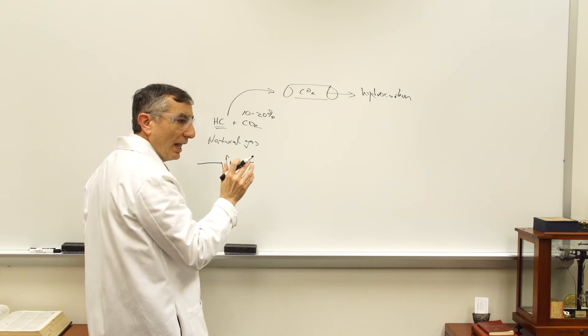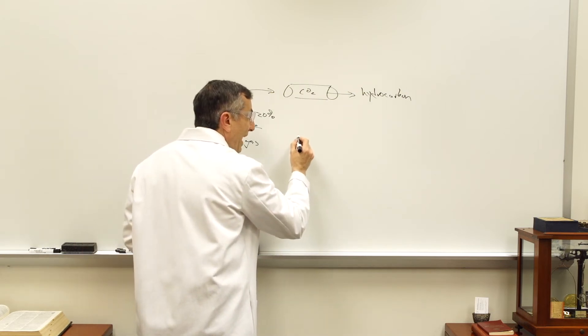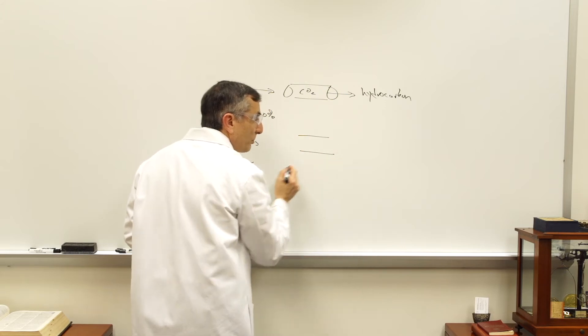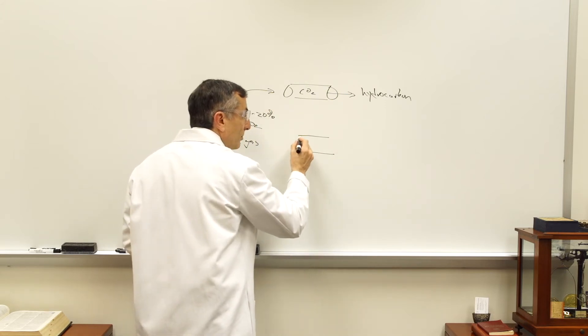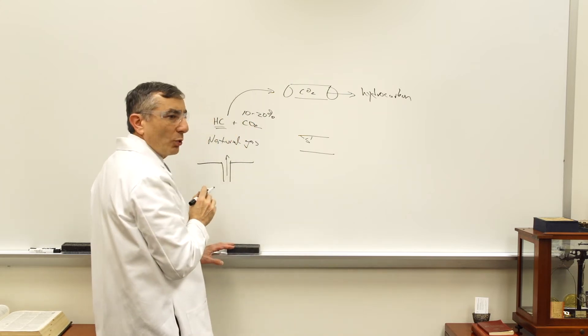And the way this happens at the molecular level is that you have these cavities—very small cavities inside this carbon material—and these small cavities might have a sulfur atom or a nitrogen atom.